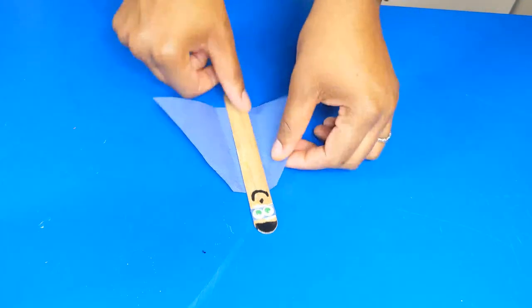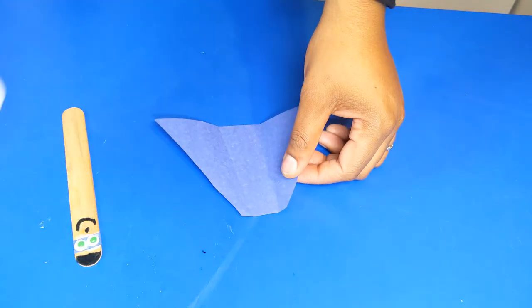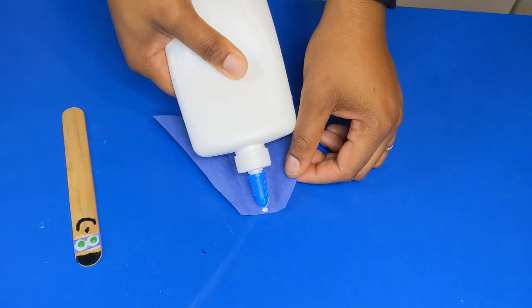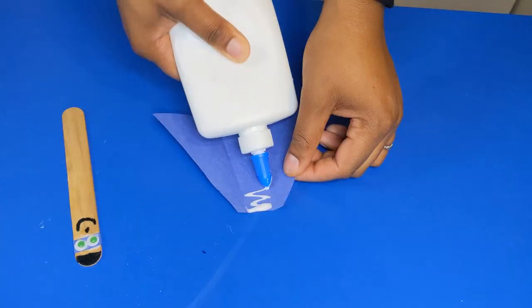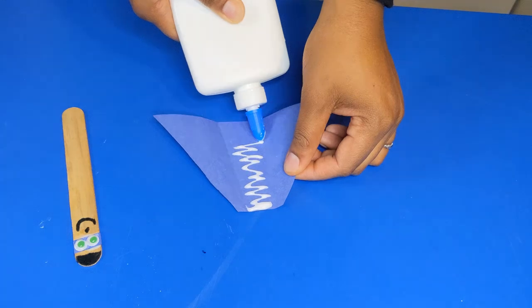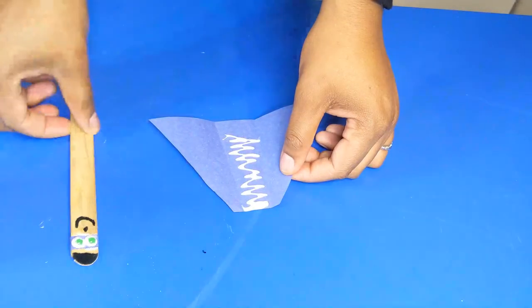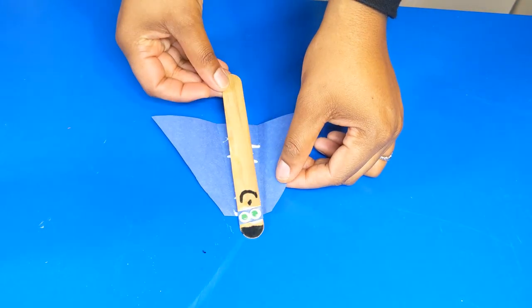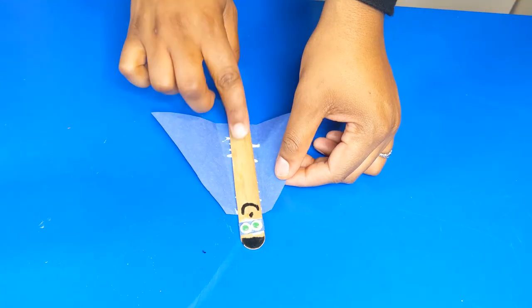We're just going to add the glue to the middle. See? Where the little fold is. And now, glue it down.